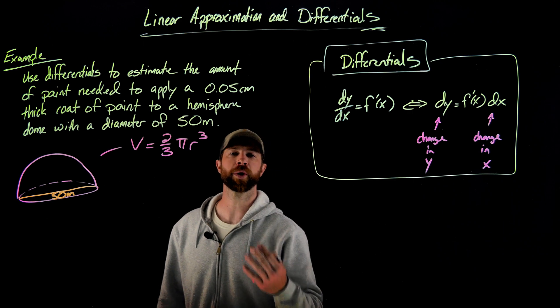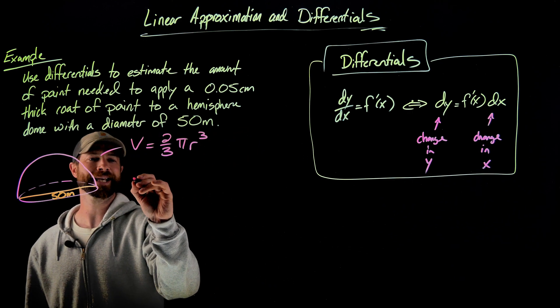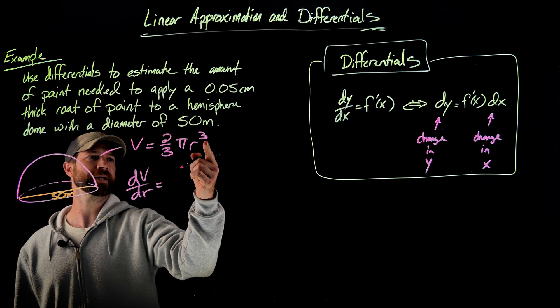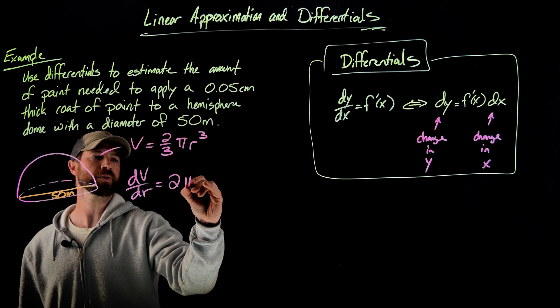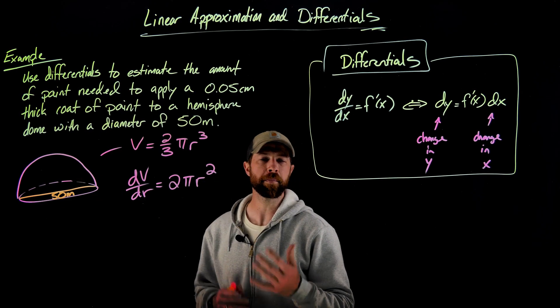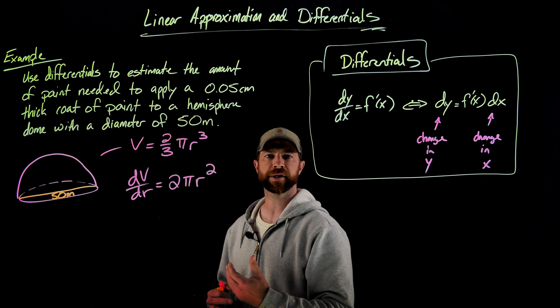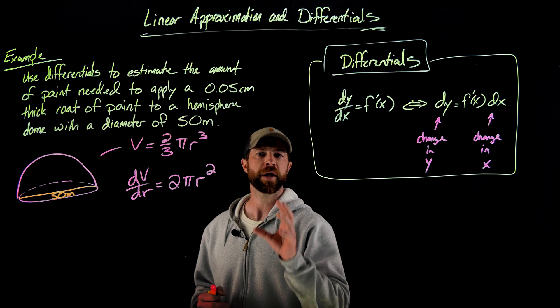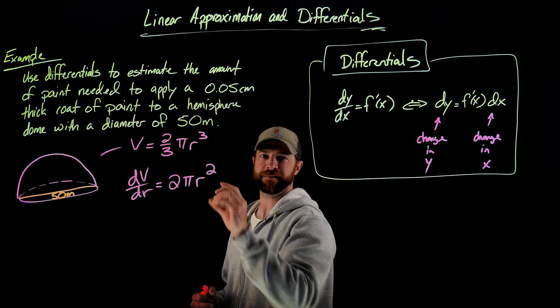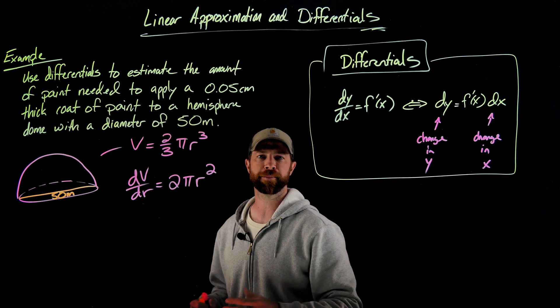Then what we're going to do is we're going to differentiate this with respect to the radius. What we get in this case is dV/dr equals, using the power rule here, bring the three down to get two pi r squared. At this point, you might be thinking, hey, aren't we going to use some kind of chain rule or some implicit differentiation here? That's not the case because we are differentiating this with respect to this variable r. We want dr here, not dt or some third-party variable.